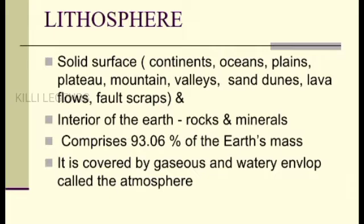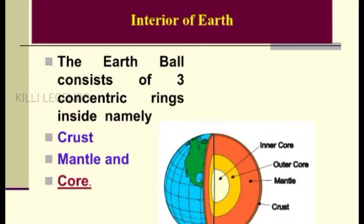The lithosphere is the solid surface — this includes lava, continents, rocks, and minerals. This is the layer of minerals forming the earth crust — 93.06% of the earth. The atmosphere is on the surface, and below that we have the hydrosphere and lithosphere, with gases and water interacting at the surface. The most important parts are the Crust, Core, and Mantle.